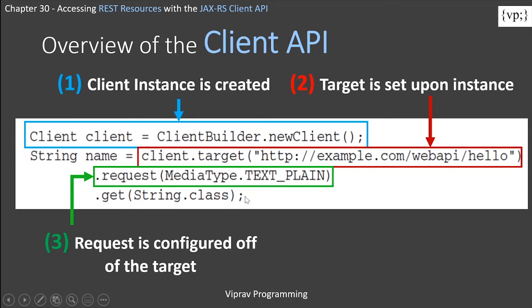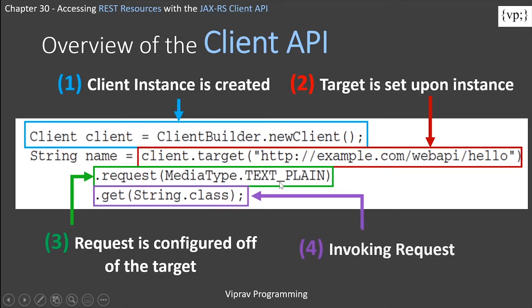In this case, we'll be looking at this media type — this would be just plain text. Finally, you invoke the request, and this .get method invokes the service using an HTTP GET request.